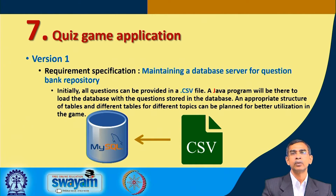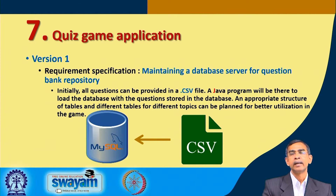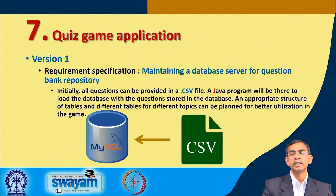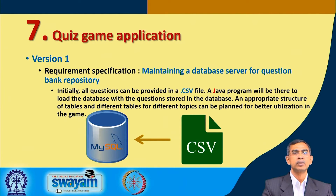Entering 500 records one by one is very difficult due to typing errors. So we can write a program that takes a CSV file as input — similar to an Excel file but comma-separated. Each field is separated by a comma; whenever you find a comma you take that as one field value, then move to the next, and so on. The six fields — question, four options, and the correct option — will be scanned and automatically populated to the database server.